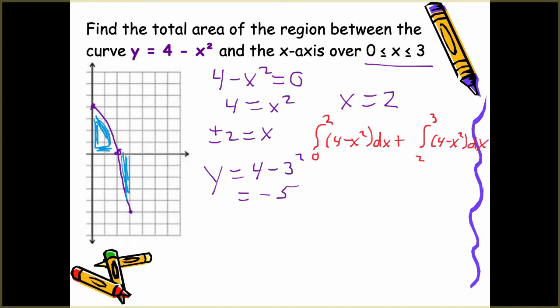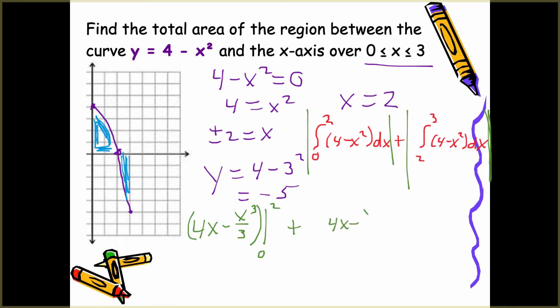Since we have a negative area from 2 to 3 — going below the x-axis — we need to take the absolute value of the negatives. Technically we apply absolute value to both integrals; if a piece is already positive, the absolute value keeps it positive. Now we evaluate the integrals. The anti-derivative is 4x minus x cubed over 3, evaluated from 0 to 2, plus 4x minus x cubed over 3, evaluated from 2 to 3. Make sure to use parentheses around the full expression.